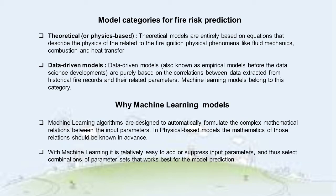We have two major categories of modeling: the physics-based and the data-driven. The physics-based models are entirely based on equations that describe the physics of the model parameters. In the case of fire, the parameters are the physical phenomena that influence the ignition, like fluid mechanics, combustion and heat transfer. The data-driven models are purely based on the correlations of the data vectors extracted from historical records. In the case of fire, those data are the ignition points together with their related environmental, morphological, fuel and climatic data. The machine learning models belong, of course, to the category of the data-driven models.